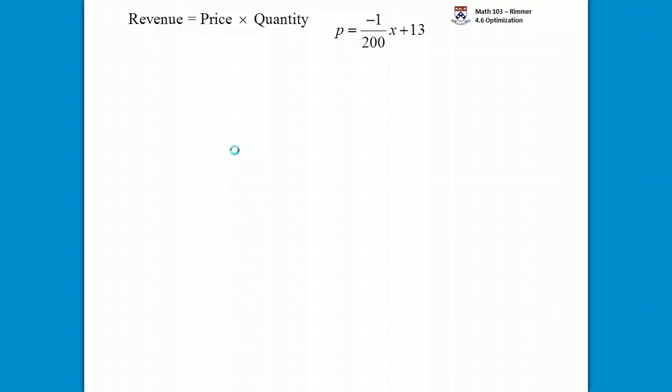We have revenue as price times quantity. Price is negative 1 over 200x plus 13, quantity is x. So we take the price, we multiply it by x, and that gives us our revenue function. Distribute the x across, it just makes it negative 1 over 200x squared plus 13x. And this is what we want to maximize.